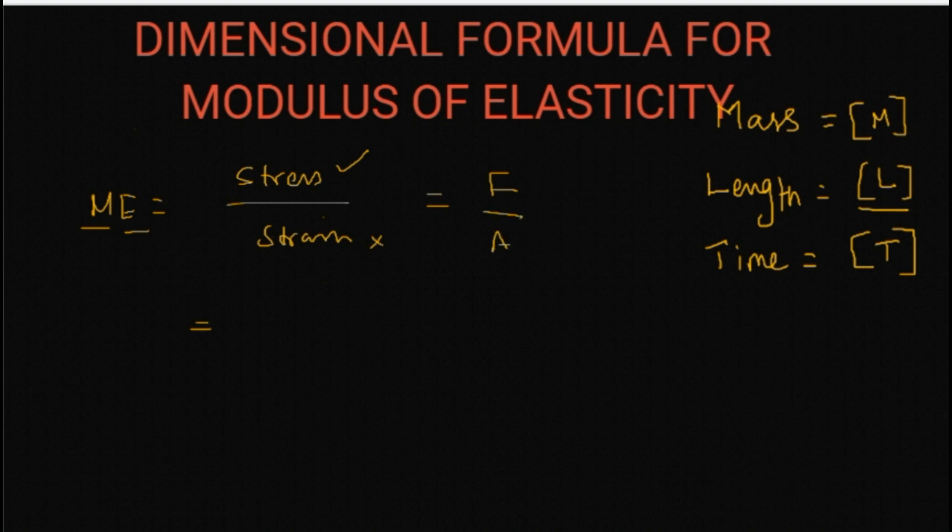Force is given by mass into acceleration by the area. Mass into acceleration is velocity by time, that is the rate of change of velocity, and area can be written as L square.